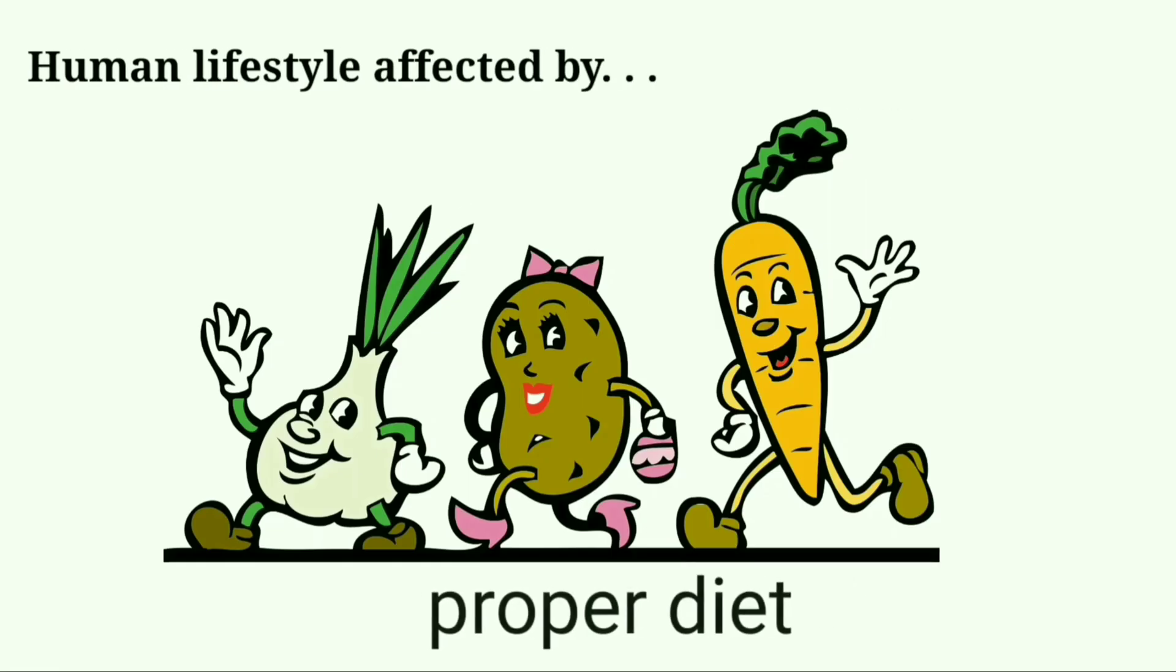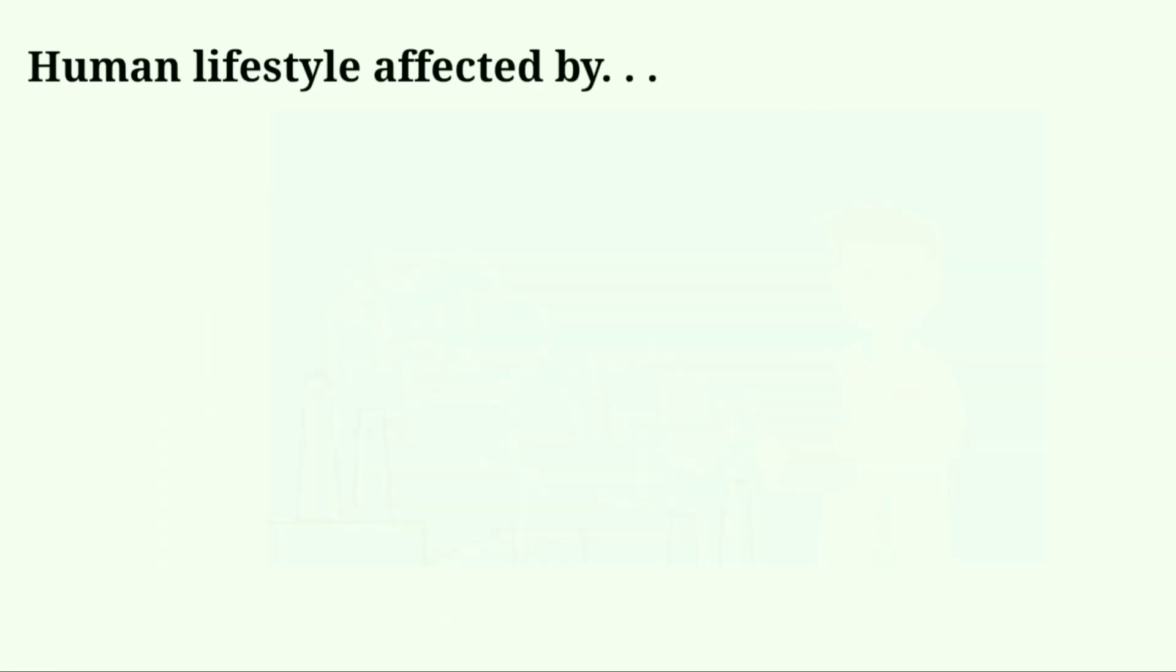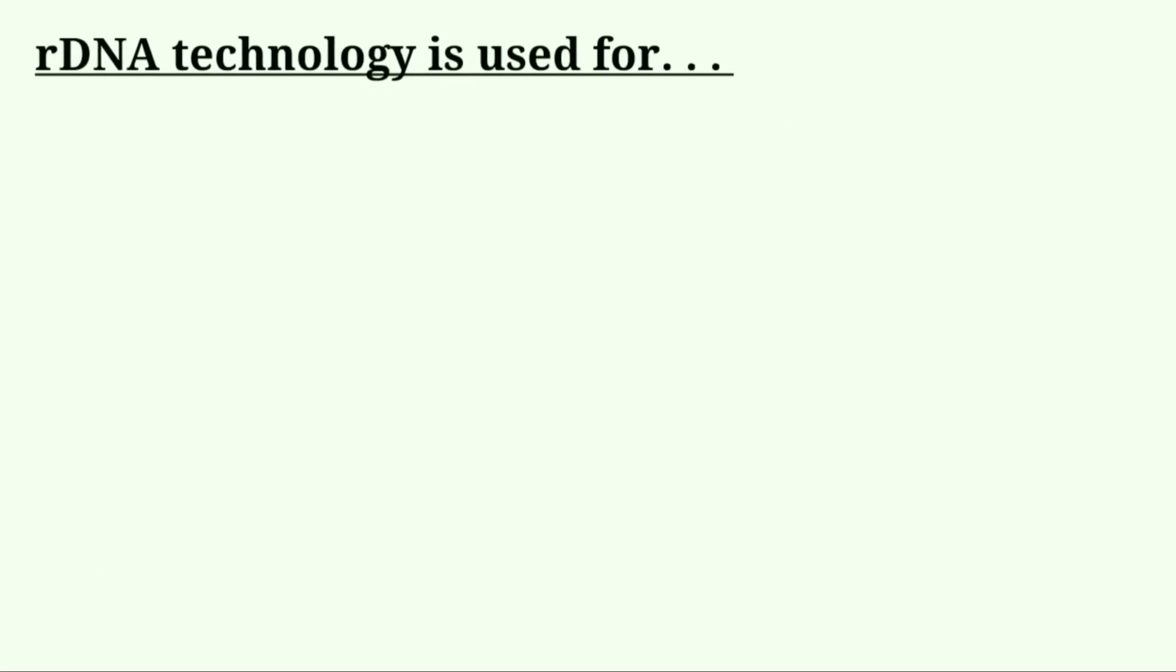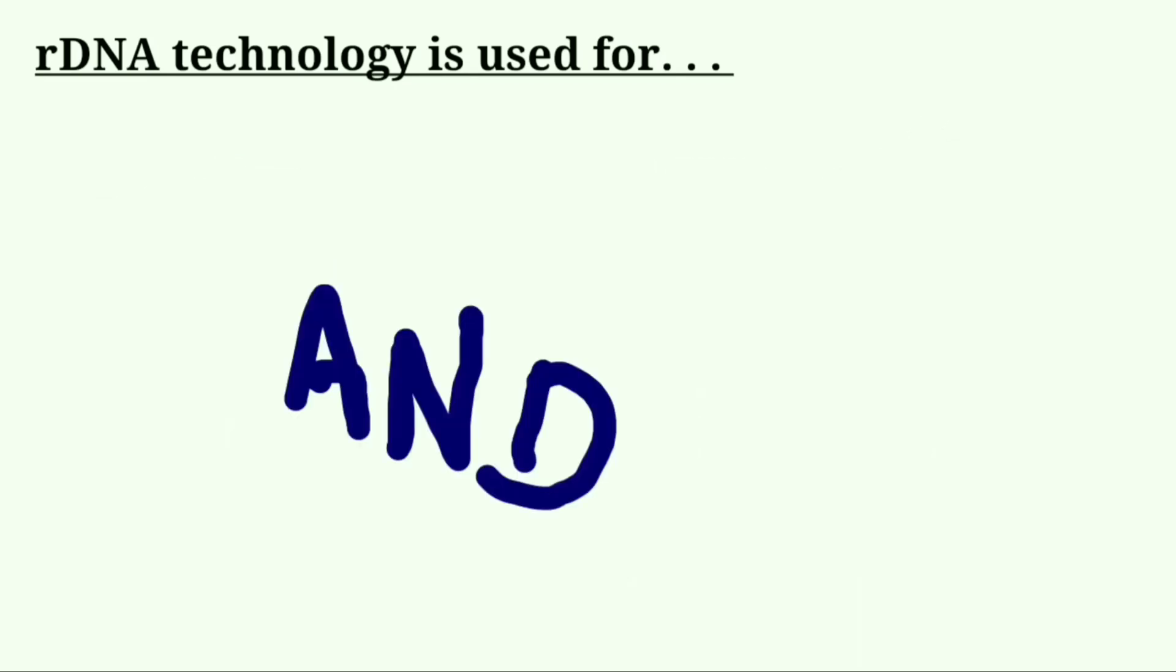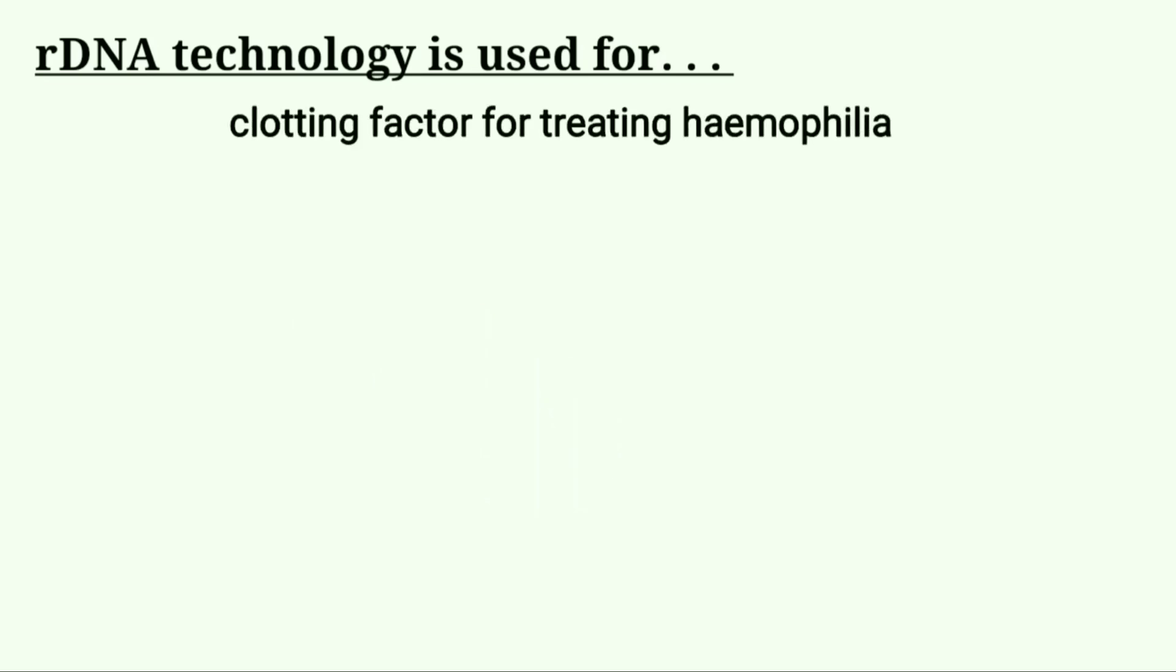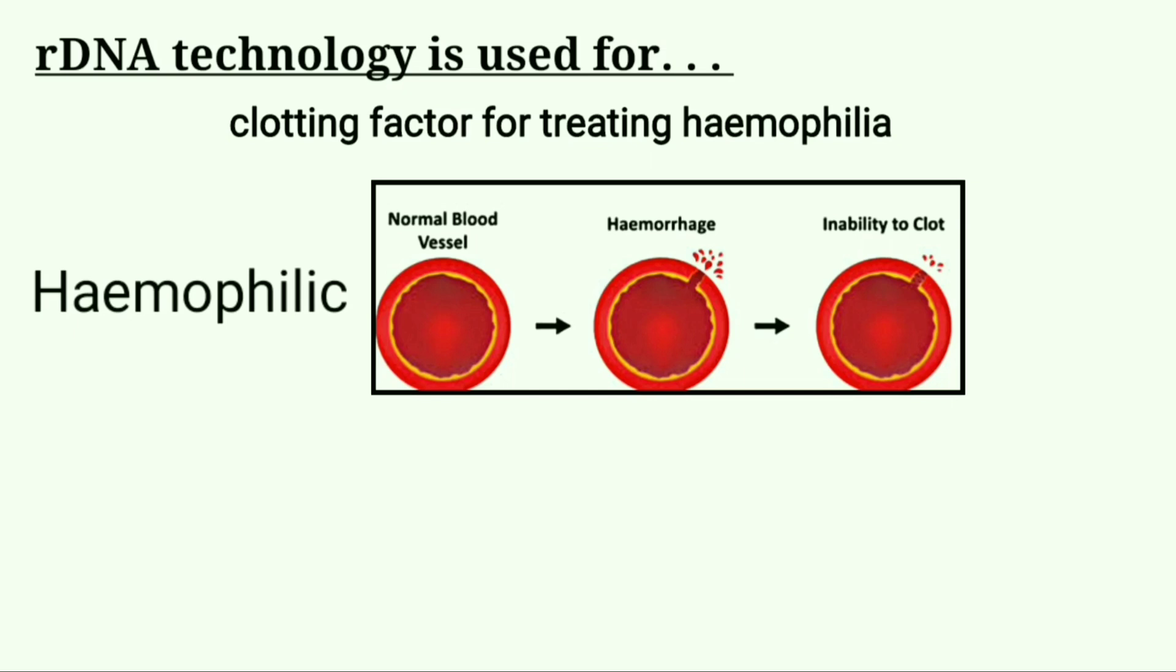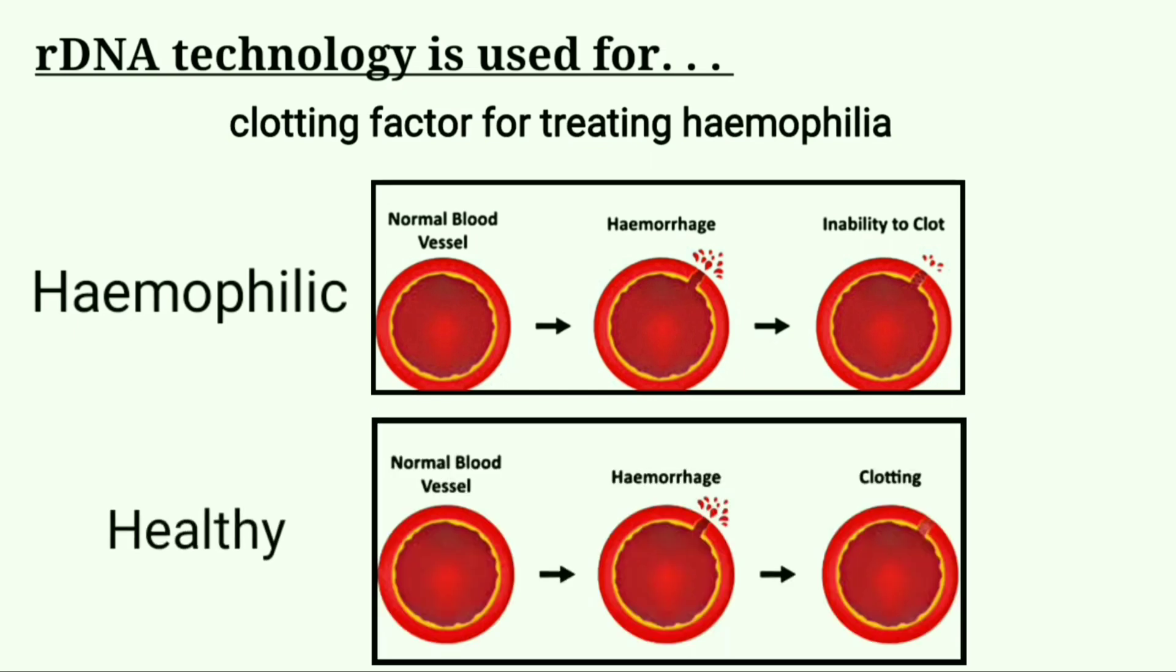Why is rDNA technology so necessary? Our lifestyle is very important from three aspects: proper diet, health problems and environmental issues. rDNA technology is used for production of vaccine and protein therapies like human insulin, interferon and human growth hormones. It is used to produce clotting factor for treating hemophilia. Hemophilia is a condition when blood can't clot properly. Excessive bleeding occur after any injuries.